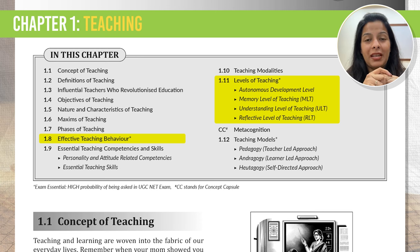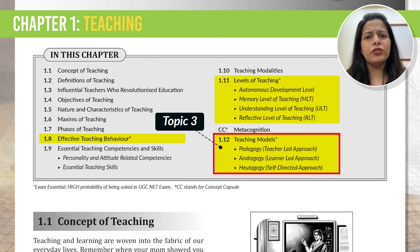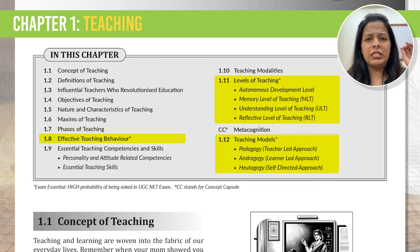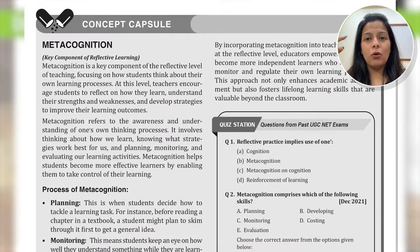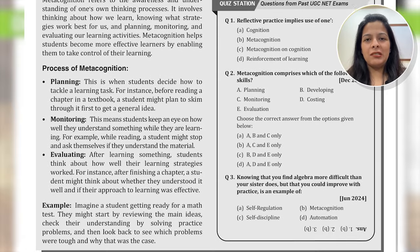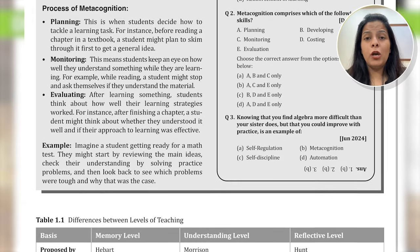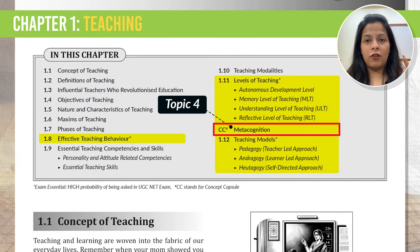The third important topic from this chapter is teaching models — we have pedagogy, andragogy, and heutagogy. These models explain how students of different age groups learn. Next up is UGC Net's current favorite topic: metacognition. Metacognition is all about how you think about your own thinking — 'meta' means self and 'cognition' means thinking. This is linked to the reflective level of teaching, which is the highest level of teaching. So expect some good questions from this area as well.